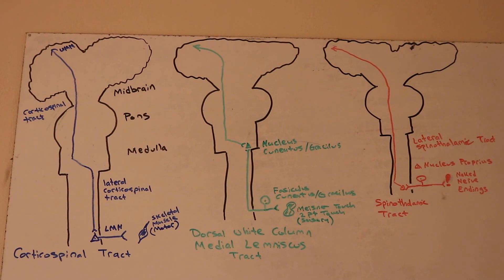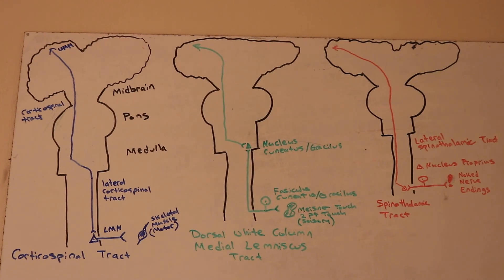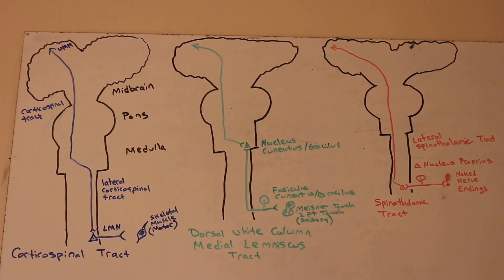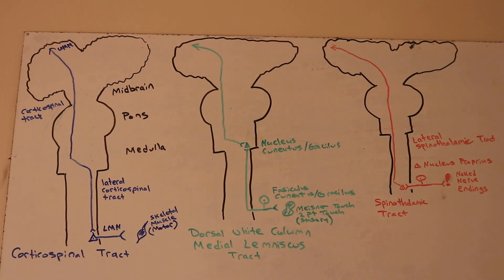Starting with the blue — the corticospinal tract. This involves your upper motor neurons and your lower motor neurons. This corticospinal tract is a motor tract. It comes from your cortex to your spinal cord. Upper motor neurons by definition communicate with lower motor neurons, and lower motor neurons by definition communicate with skeletal muscle.